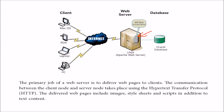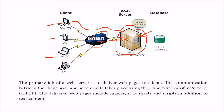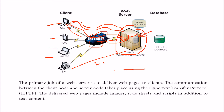The web server program runs on a large machine. Clients interact with it over the internet — asking for a page, it returns that page; asking for gaming, it renders the game. The primary job of a web server is to deliver web pages to clients. Communication between clients and the server takes place using HTTP — Hypertext Transfer Protocol. Delivered web pages may include images, style sheets, scripts, audio, and video.